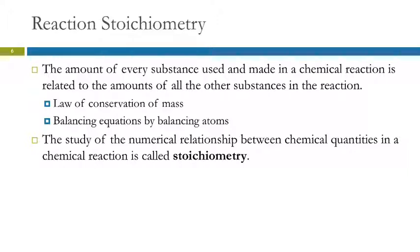When we study the relationship between chemical quantities in terms of numerical quantities, it's called stoichiometry. You'll see this word come up a lot. It's looking at the relationship of quantities of substance in a chemical reaction.